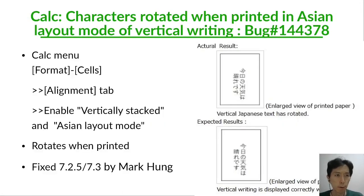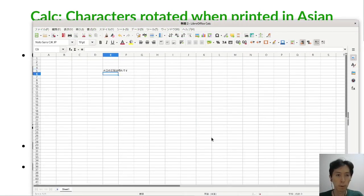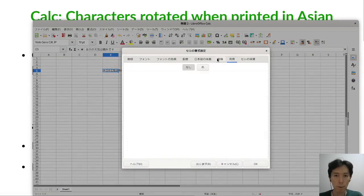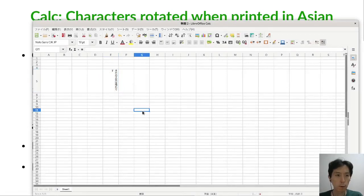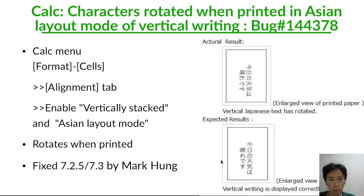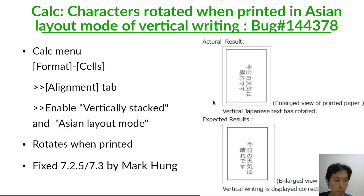Another case: in Calc, characters rotate when printed in degenerate-one mode in vertical writing. You move and type text, then set vertical writing and Japanese vertical writing mode — the display looks fine, but only when printing does the character rotation problem occur.